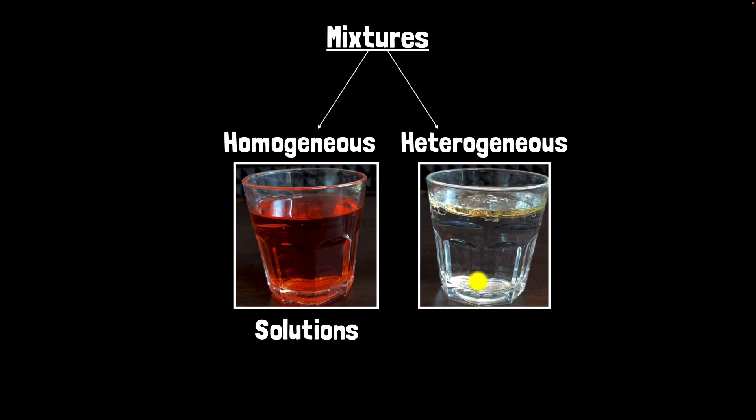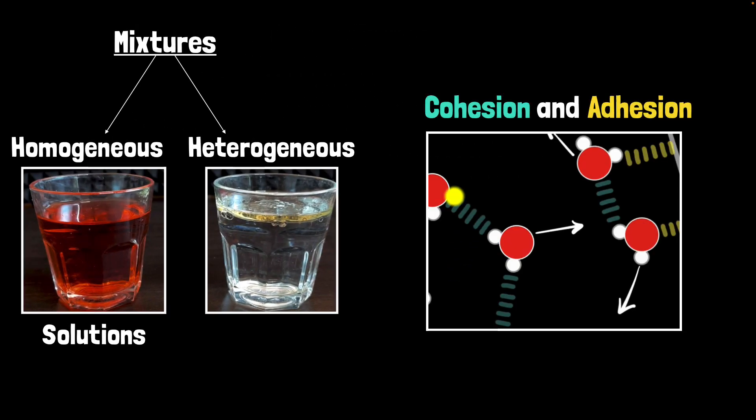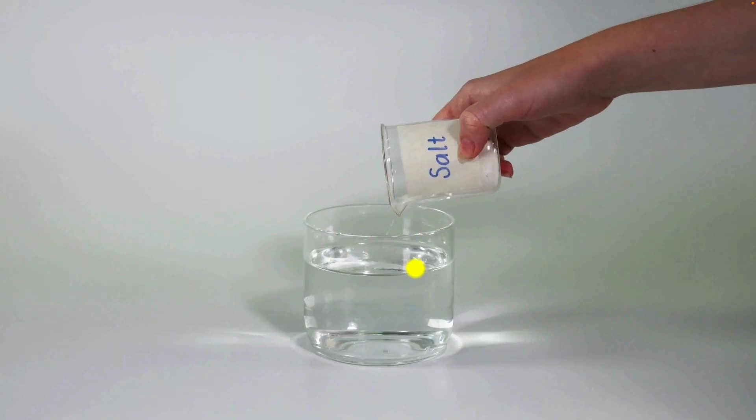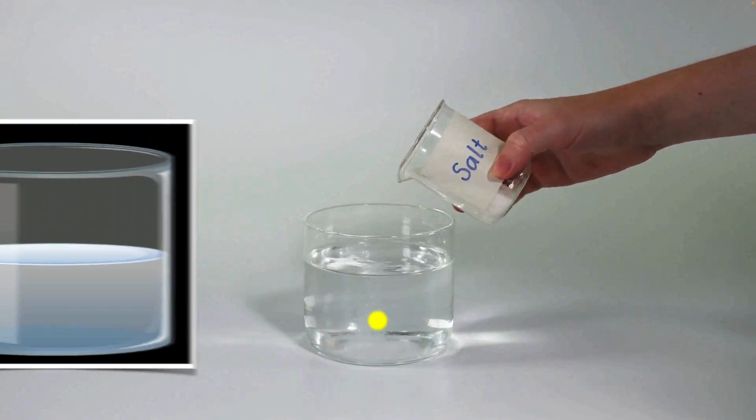And remember, what allows the solute particles to be dissolved uniformly in water? Well, it's the water's magnet-like abilities, which allows it to stick to itself, which is called cohesion, and to stick to other substances, which we call adhesion. This allows solute particles to stick to water molecules and get dissolved throughout the entire thing uniformly. But now let's look at the solution a little bit more carefully. What really happens when you put salt in water, for example?